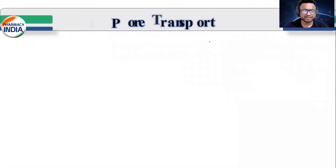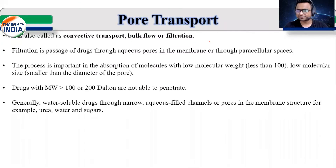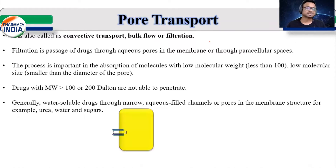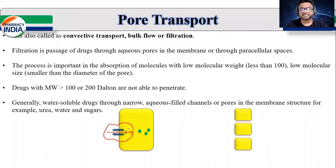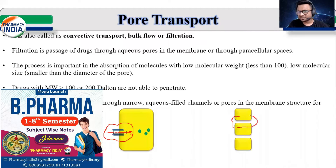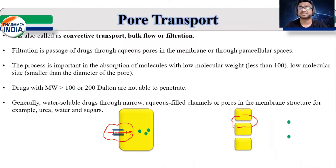तो हमने ये सीखा था इस slide में, कि पोर ट्रांसपोर्ट मतलब The process in which molecule moves through small pore. एक छोटे pore के थूँ molecule जा सकता है cell के अंदर. एक possibility है जैसे कि इस animation में हमने देखा था, ये particular water का channel है, इसके तरूँ water अंदर जाता है, बट उस water के साथ drug molecule भी अंदर जा सकता है. That is first mode of pore transport, but second mode is paracellular transport. दो cells के बीच में भी empty space होती है, तो कुछ drug molecules इस empty space का यूज़ करके tissue के अंदर आ सकते है. So this is called as pore transport mechanism.